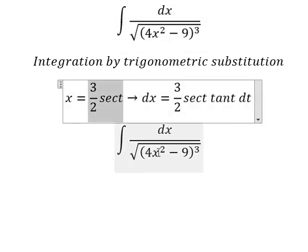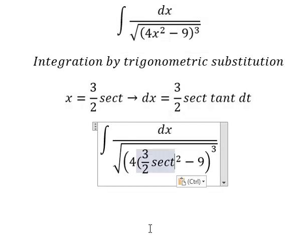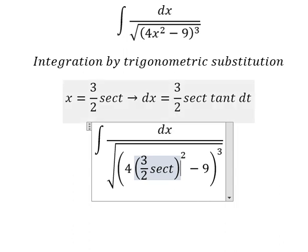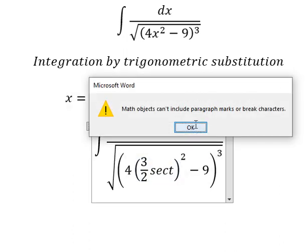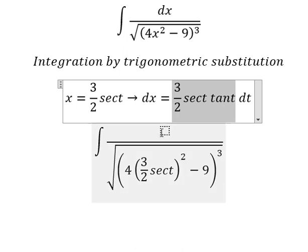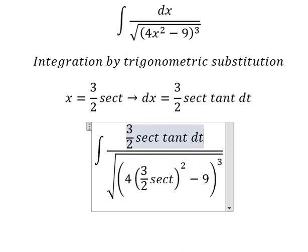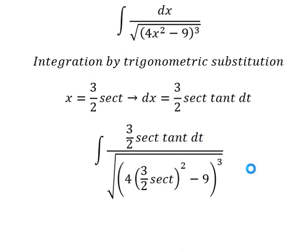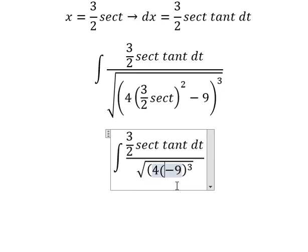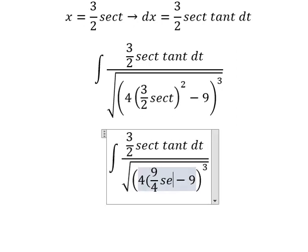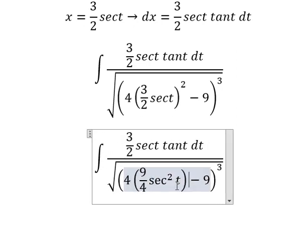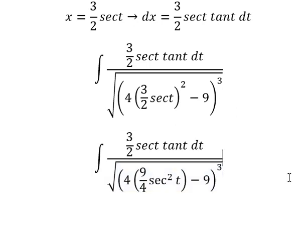So I will put this one here. The x we change for this one. So in this one we have 9 over 4 secant squared t. So number 4 and number 4 we can simplify.